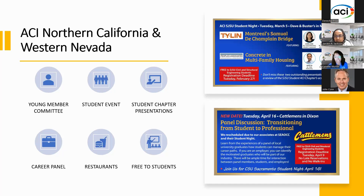ACI Northern California has held some of these student-focused events at venues like Dave and Buster's. If you normally hold monthly meetings in a conference room, think about going somewhere where younger members will be attracted to the venue — just to get them in the door and let them know they're welcome.